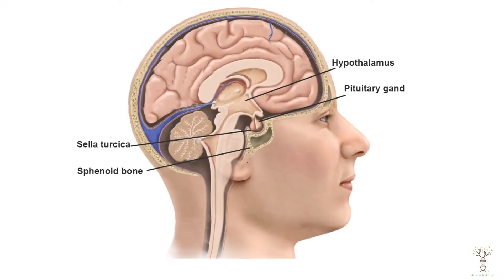In this diagram we can see where the hypothalamus is located. It contains many neurons, and each group of neurons clustered together is called a nucleus. These nuclei control the pituitary gland, which has an anterior and a posterior region and is highly protected in a depression of the sphenoid bone called the Sella Turcica.